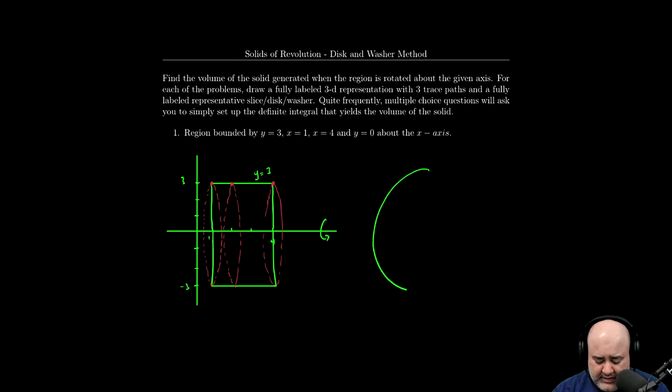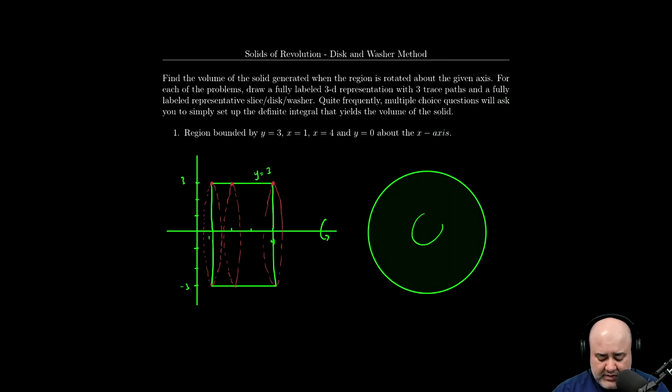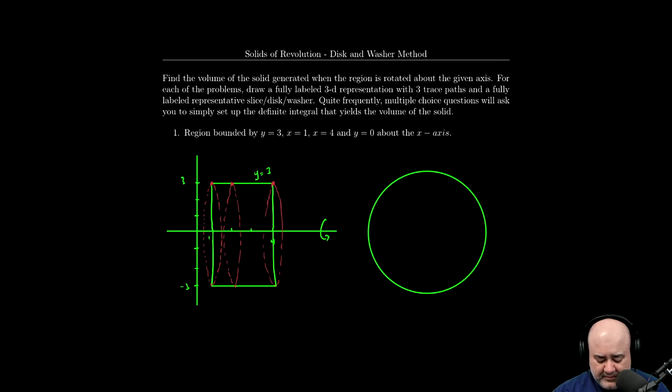So reason I say that is when we draw a representative slice, it's going to be a solid circle, it's not going to be something with something carved out in the middle, it's just going to be a solid circle.